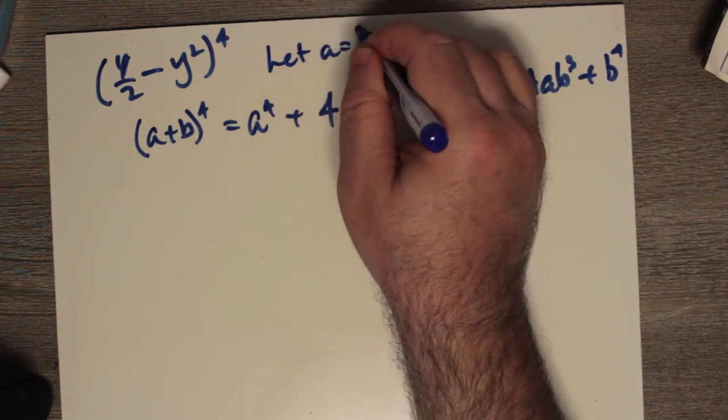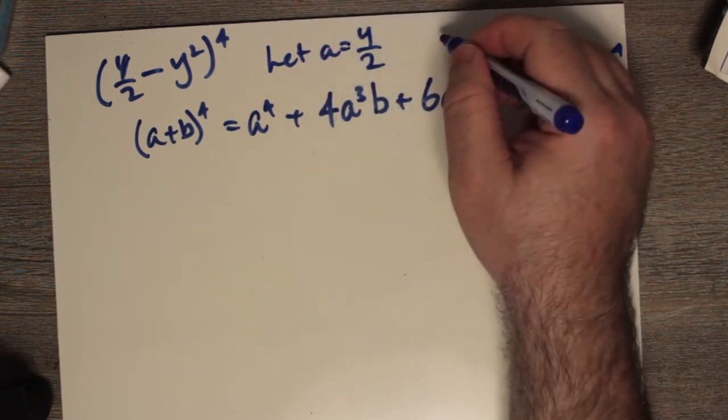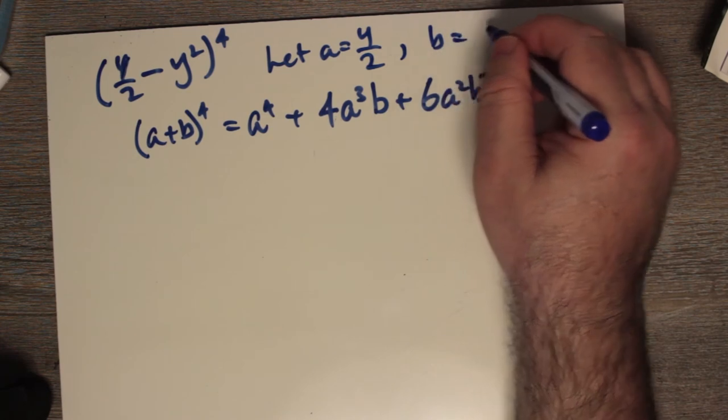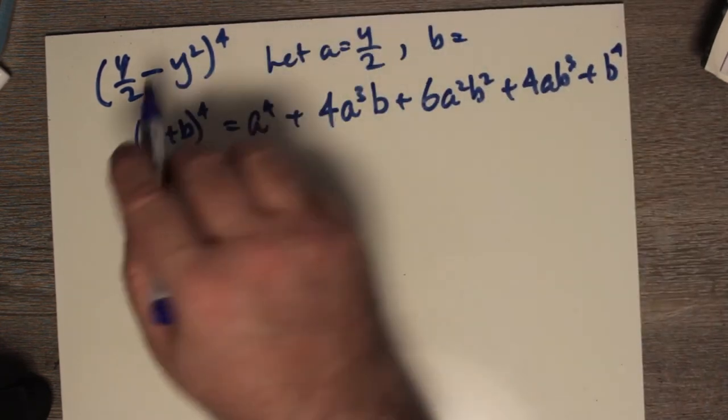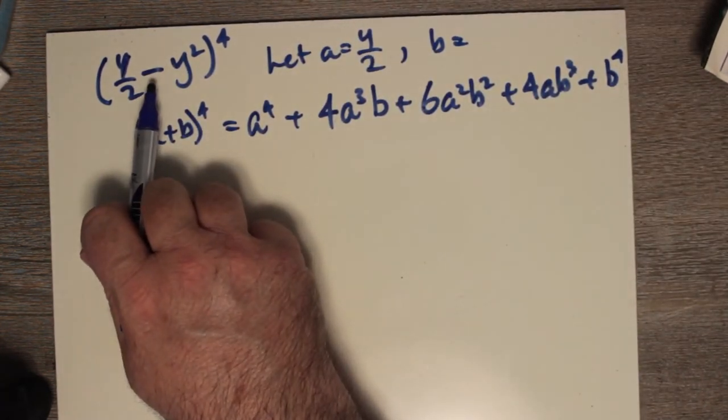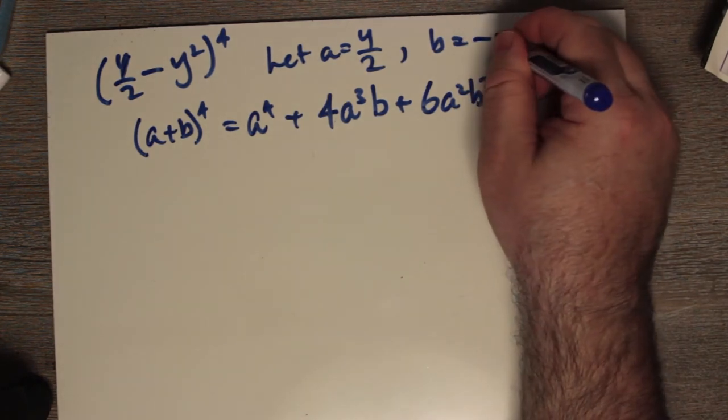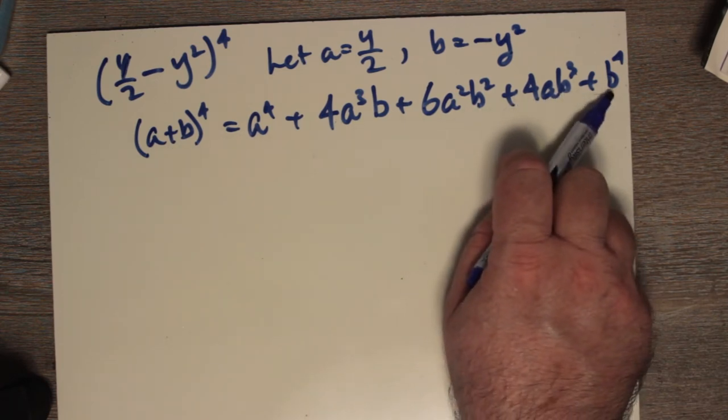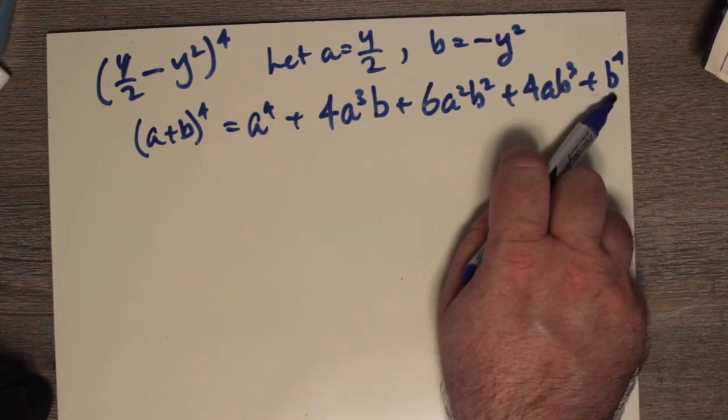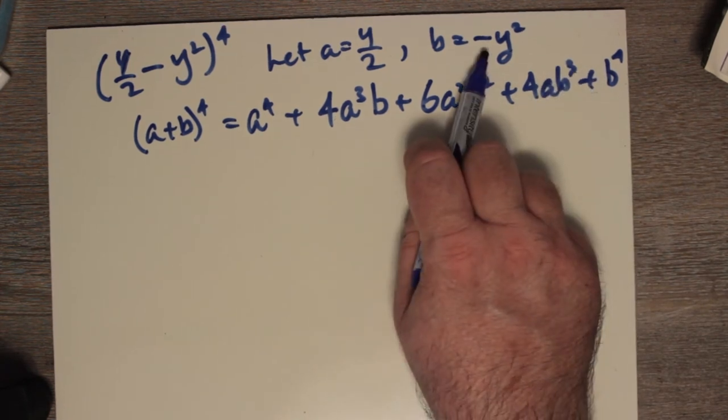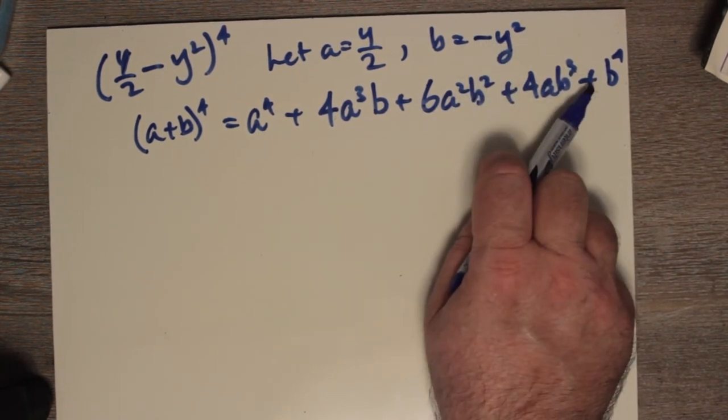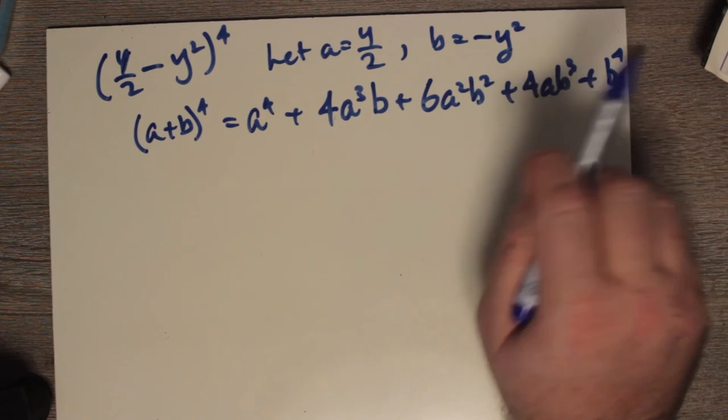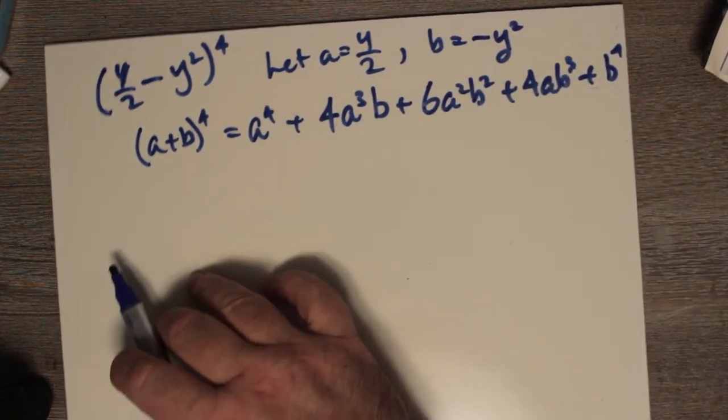Let a equal y halves, or y over 2, and let b equal. Now, this is the tricky part. Remember there's a minus sign here? You include the minus sign. And that way, you can get away with putting a plus sign here, and just treating this as a normal expansion of a normal Pascal's triangle. When you do your substitution of b, don't forget your minus sign. And then work out your minus sign as you go. Okay?